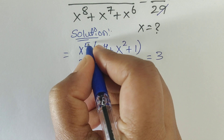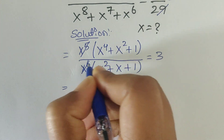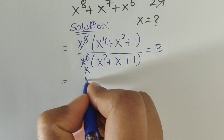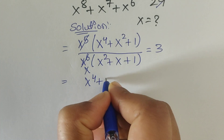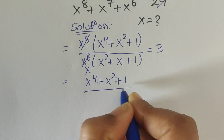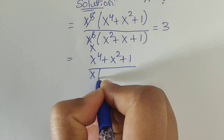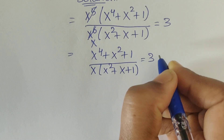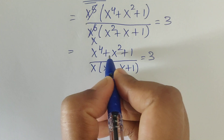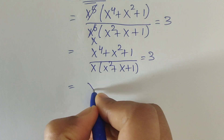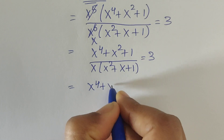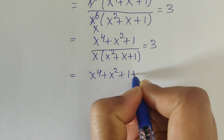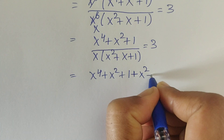So x power 5 cancels with x power 5, leaving one extra x in the denominator. Then we get x power 4 plus x power 2 plus 1, divided by x times x square plus x plus 1, equal to 3. Now, to make a perfect square in the numerator, we add and subtract x square.